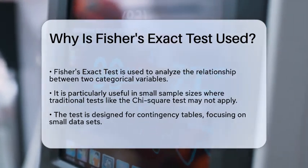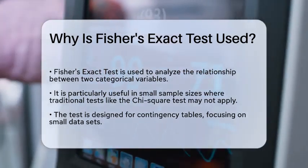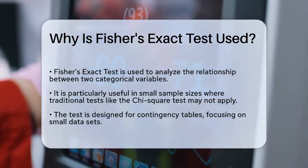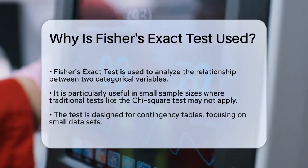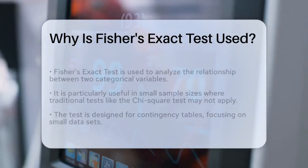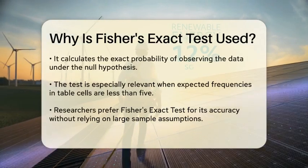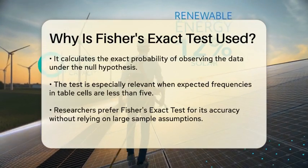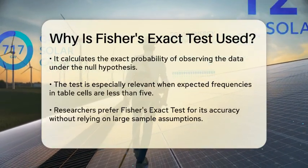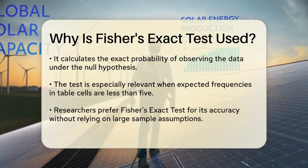Fisher's Exact Test is a statistical method used primarily in the analysis of contingency tables, particularly when the sample size is small. It calculates the exact probability of observing the data assuming that the null hypothesis is true.